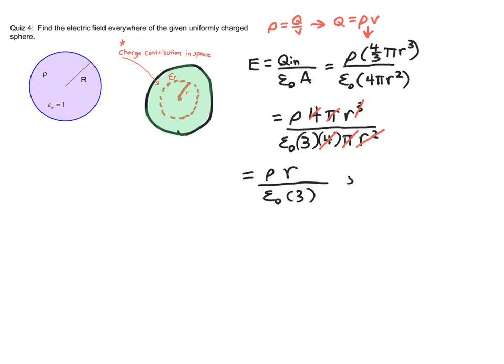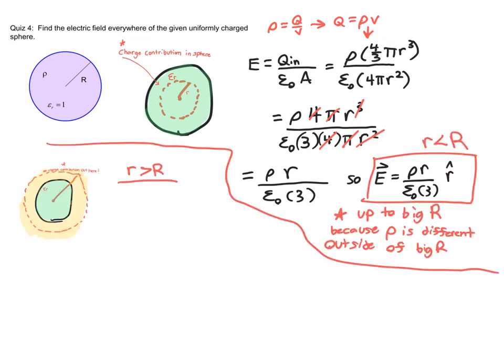Once you start to reduce the equation, you can get your electric field. For any given R, you're going to be given this electric field in this R direction, and remember that this is up to big R.